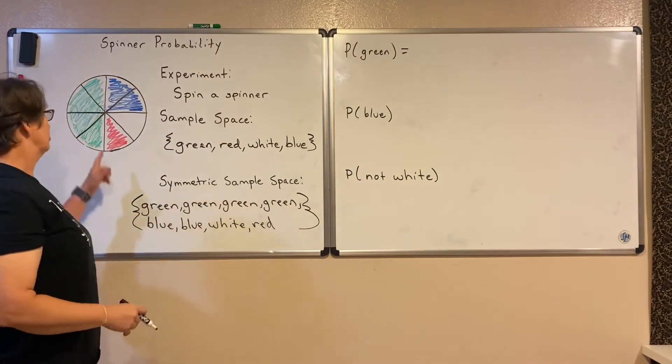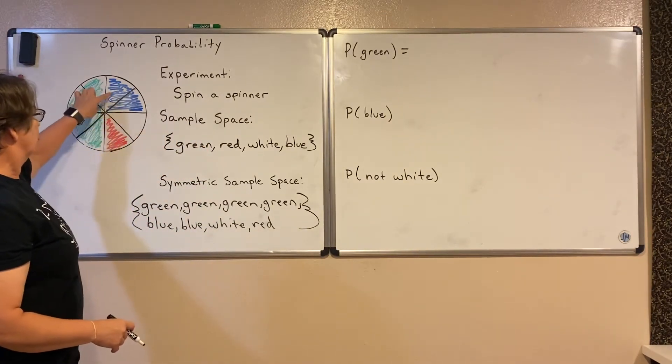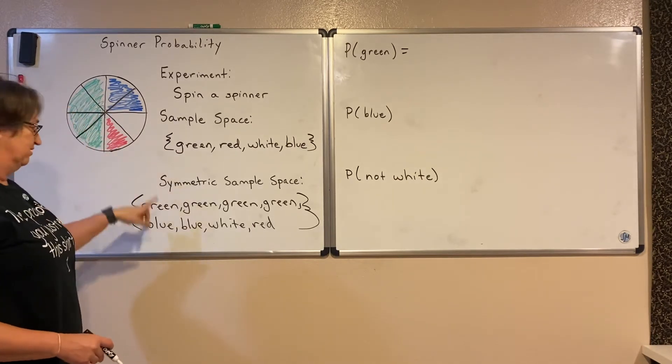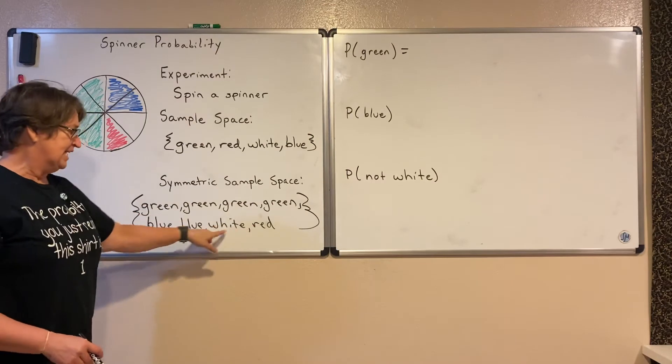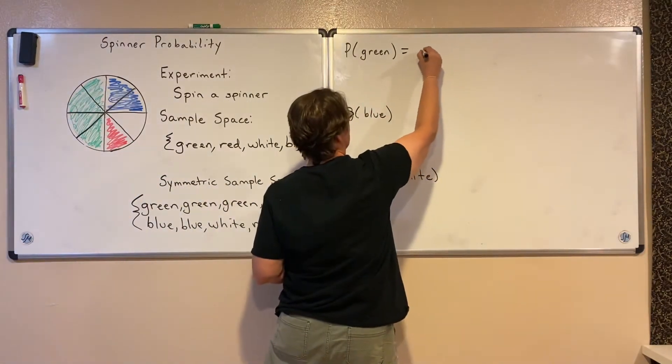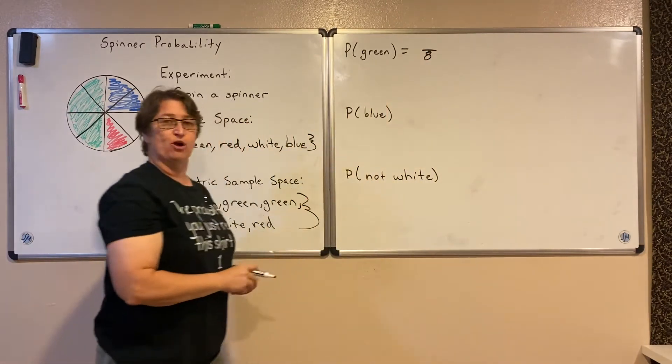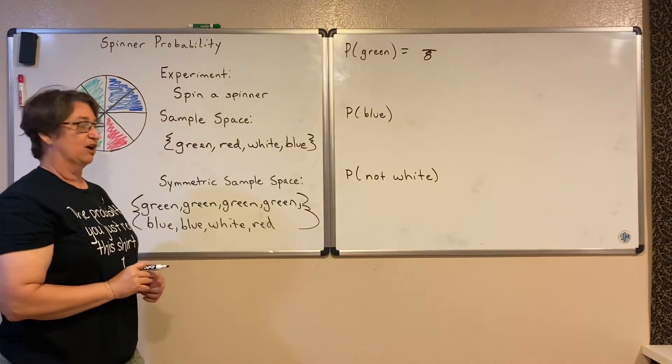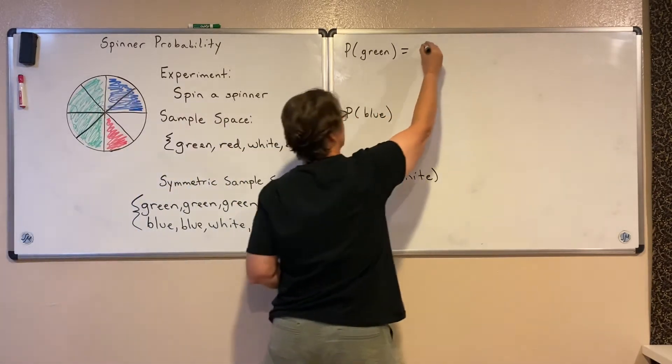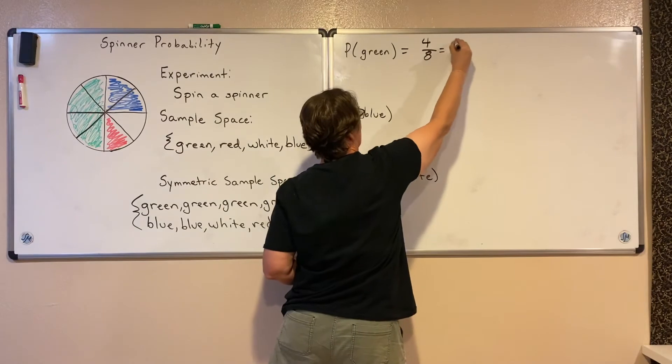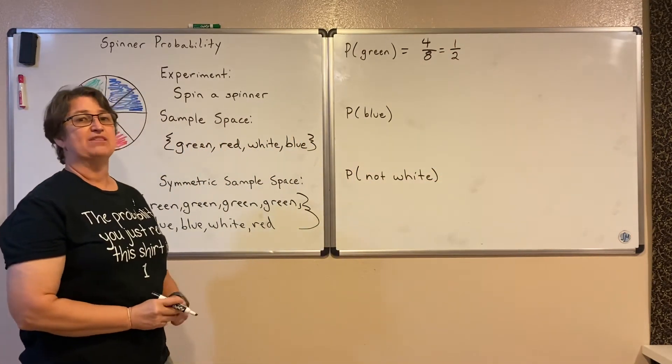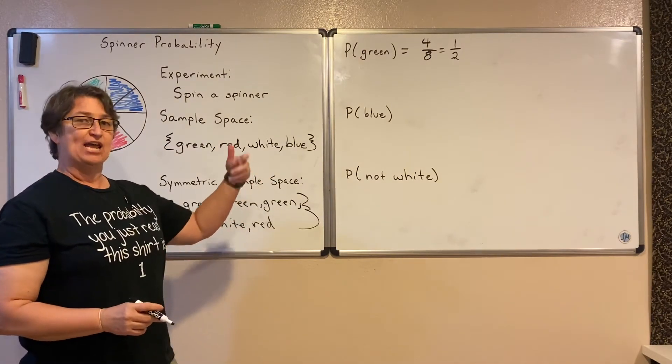If we look, we see that there are a total of one, two, three, four, five, six, seven, eight equal pieces, or eight equally likely outcomes. That eight is our denominator. Then we look for the total number of ways we can get that event of green, in which case there are four of those pieces. So four-eighths, or one-half, or fifty percent, is the probability that we spin a green.